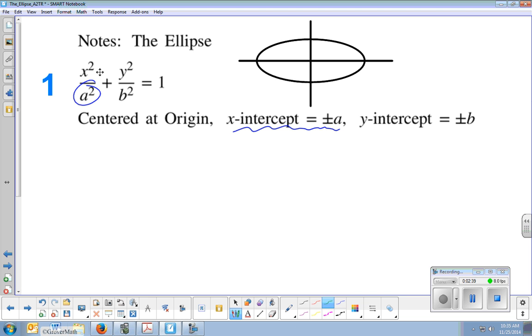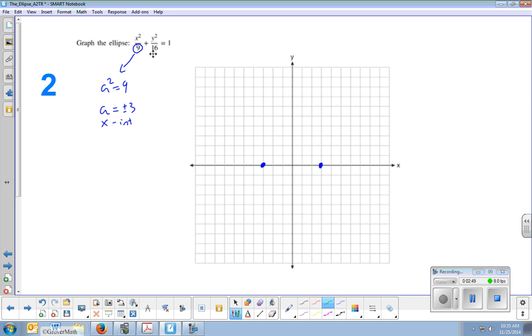And it's basically the same thing but for the y's. The number below y squared we call b squared, and the y-intercepts are plus or minus b. So for this example, since the number below y squared is 16, that means b squared equals 16, which means that b equals plus or minus 4, the square root of 16. And these are your y-intercepts.